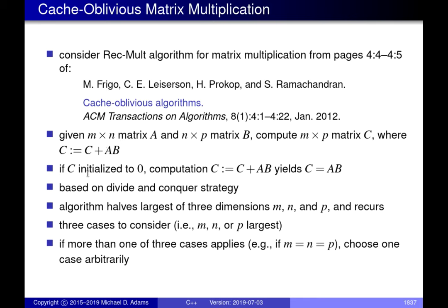This particular approach is based on a divide-and-conquer strategy. We have three dimensions of relevance: M, N, and P, which are the various numbers of rows and columns of the matrices involved. Essentially, what we do is pick the largest of the three dimensions and then split the matrices along that dimension. There are basically three cases to consider because when we ask which of M, N, and P is largest, there are three possibilities.